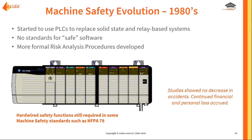We still were not showing that we're safer. Studies continue to show no decrease in accidents, and continued financial and personal losses were occurring. Even as we developed some more formal risk analysis procedures in the 80s, hardwired relays were still being required by certain safety standards.